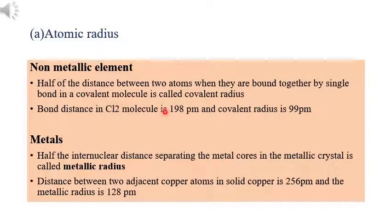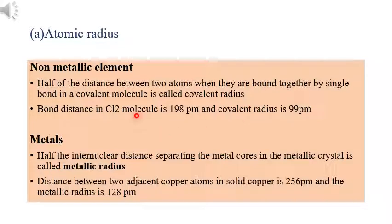For example, in the case of the chlorine molecule, the bond distance is 198 picometers. The distance between the centers of the two atoms is 198 picometers, and the covalent radius is equal to half of that — that is, 198 divided by 2, which equals 99 picometers.